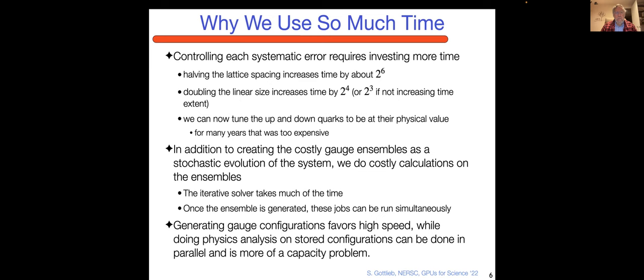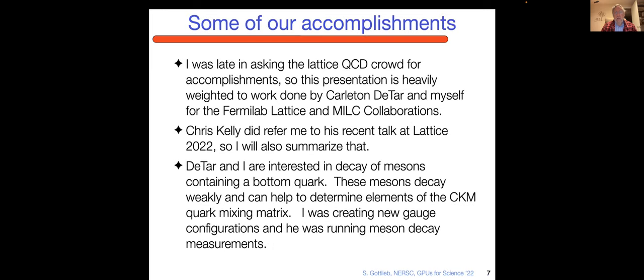When we create these costly ensembles through the stochastic evolution to get snapshots of the vacuum, the iterative solver takes much of the time. You'd like to do this in a few stochastic evolution steps, so you'd like this to run quickly, and it's more of a strong scaling problem. Once the ensemble is generated, you store them on disk and tape, and you can run several measurement jobs in parallel. So creating the gauge fields, you want high speed, more like a capability problem. Doing physics analysis, it's more like a capacity problem, but it's still a high rate of speed.